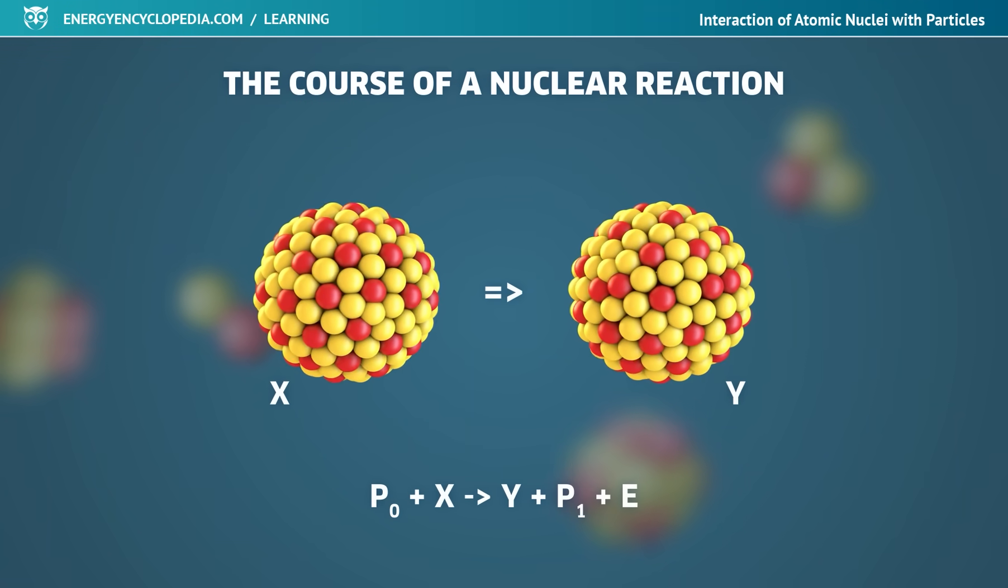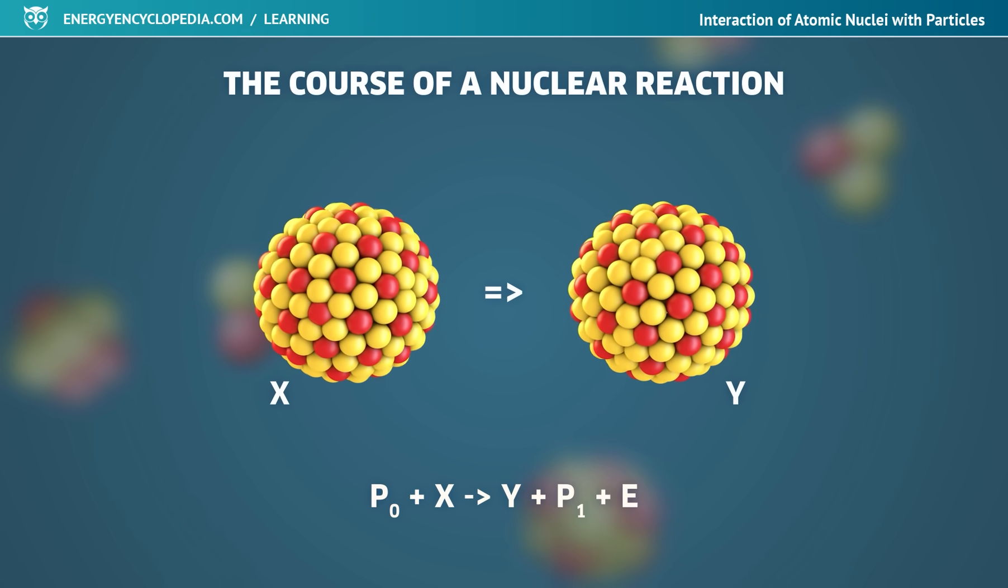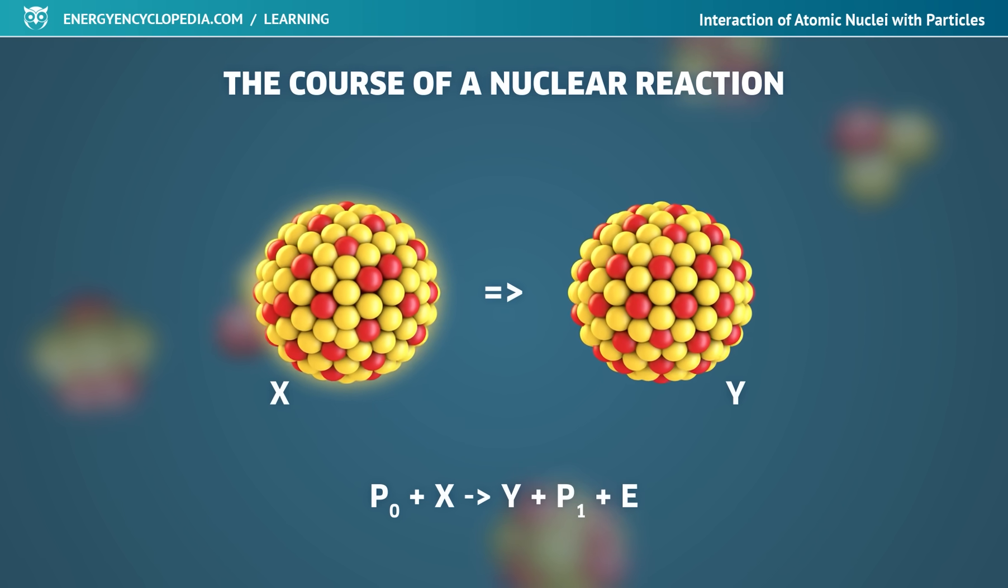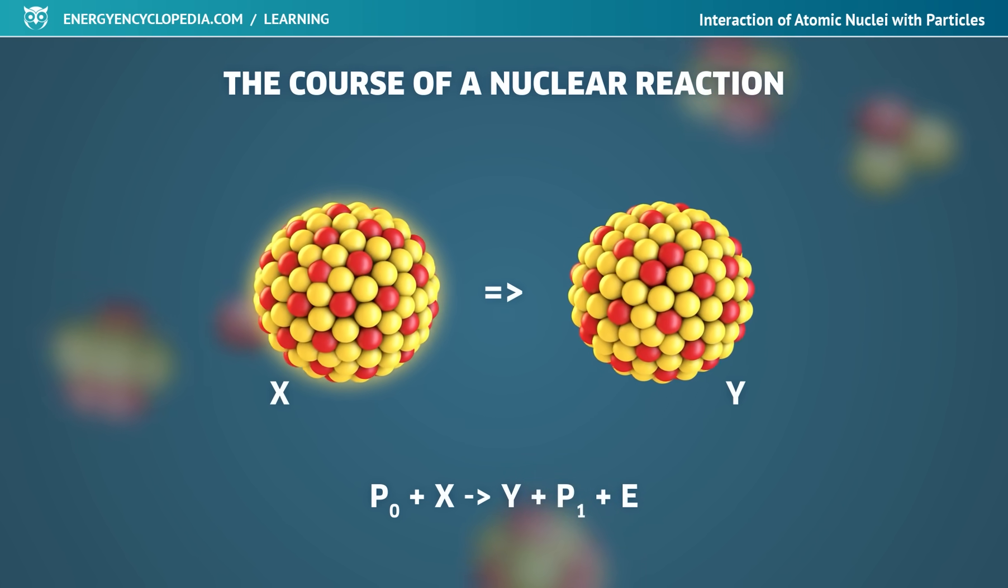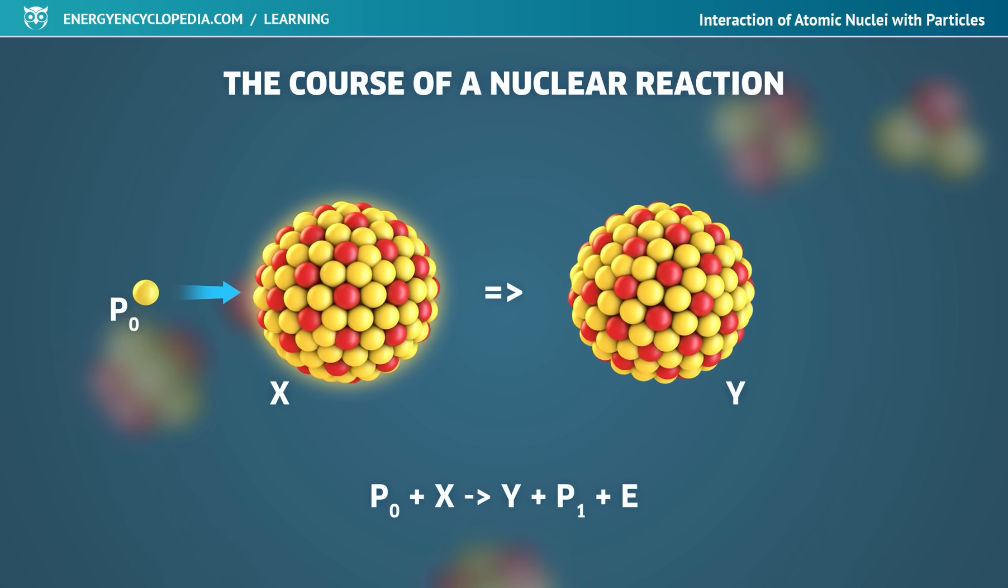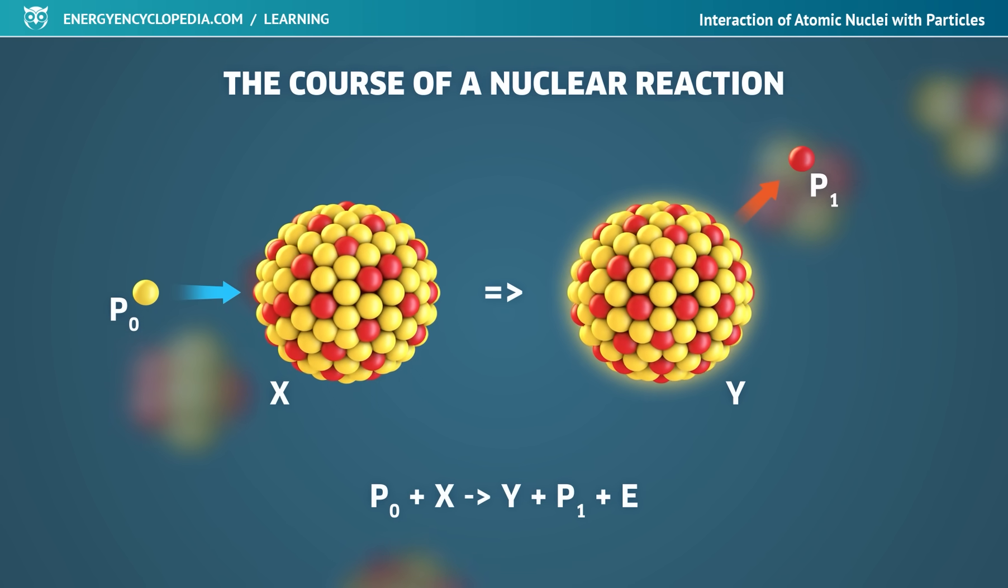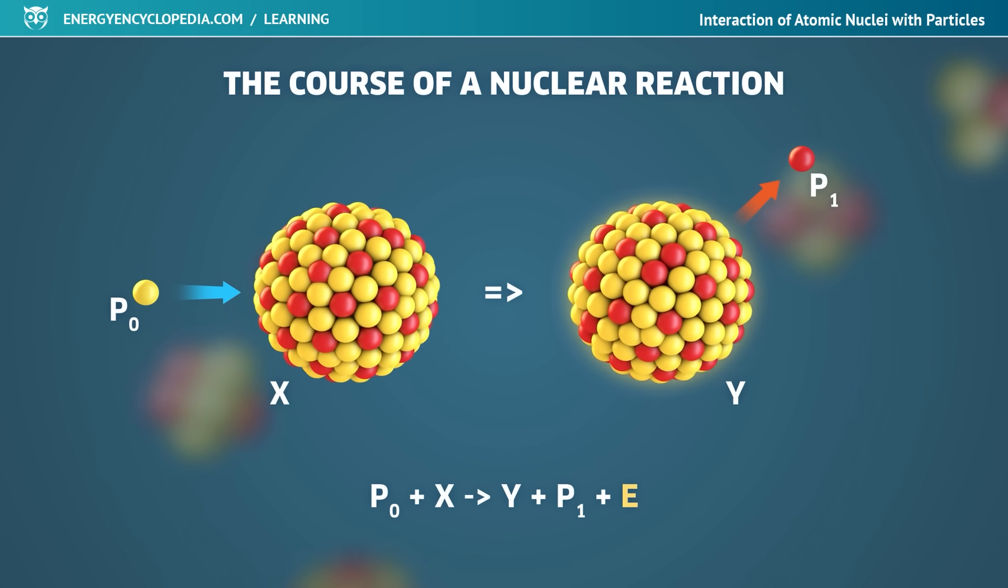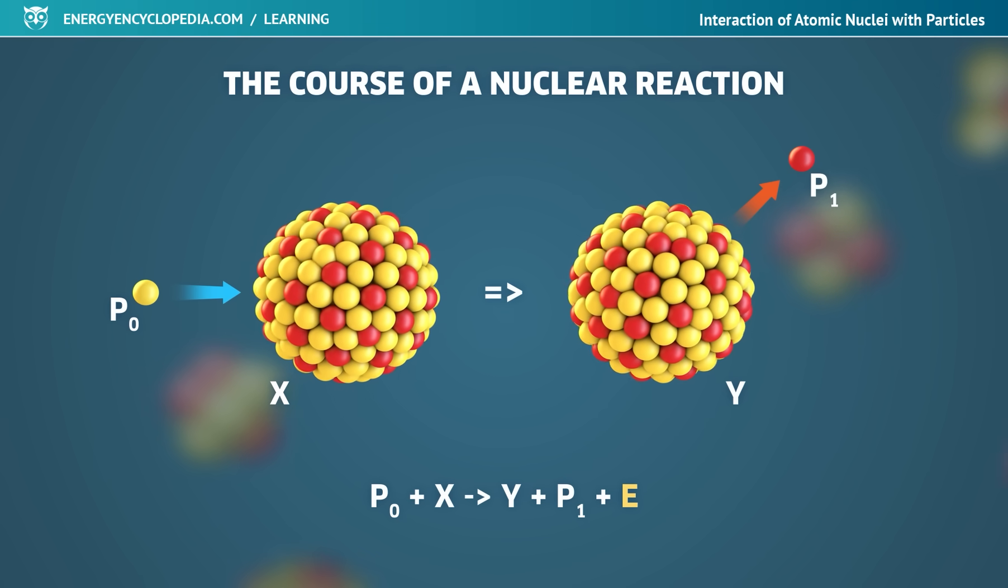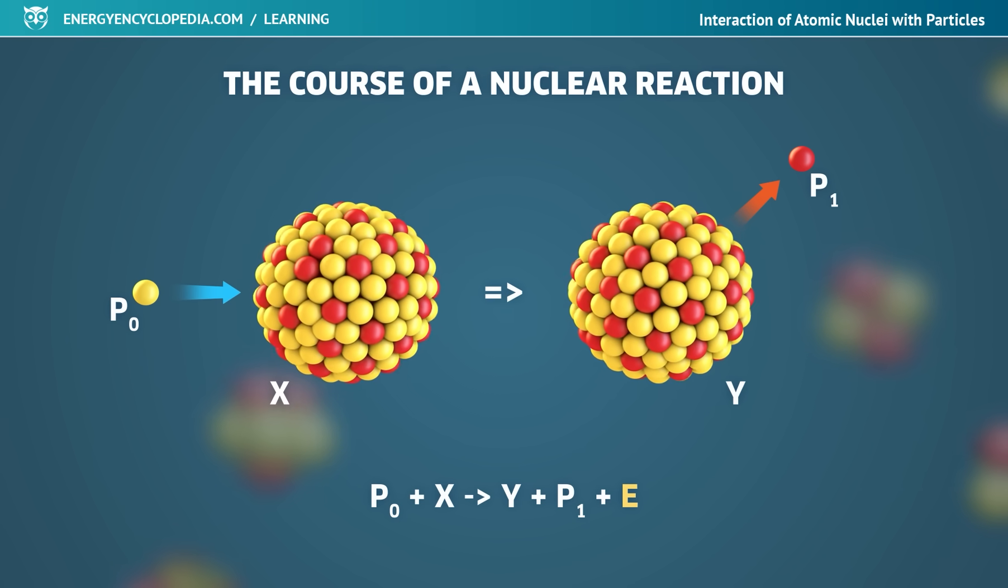In general, a nuclear reaction can be written by an equation similar to a chemical reaction. This simple notation means that the original nucleus X is bombarded by a particle P0, and this interaction causes the X nucleus to change to a Y nucleus and the emission of another P1 particle. The parameter E expresses the overall energy balance of the nuclear reaction, both the energy supplied and the energy released during the reaction.